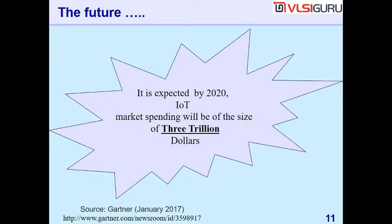What is the future of embedded systems and IoT? Gartner, one of the famous analysts in the industry, predicts that by 2020 market spending on IoT will be on the order of three trillion dollars. This means many more devices are going to get connected to the internet — not just embedded systems, but a lot more small computers that will evolve and all get connected to the internet.